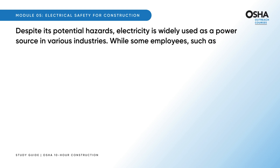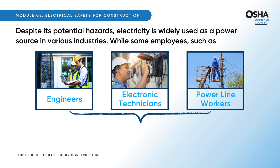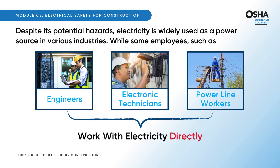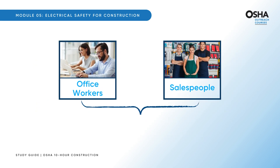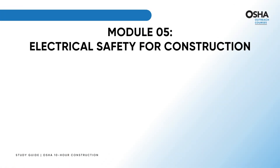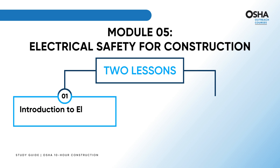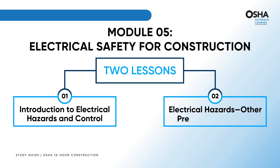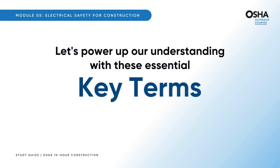Some employees, such as engineers, electronic technicians, and power line workers, work with electricity directly during construction, while office workers and salespeople work with electricity indirectly. This module is split into two lessons: first, Introduction to Electrical Hazards and Control, followed by Electrical Hazards and Other Preventive Measures.